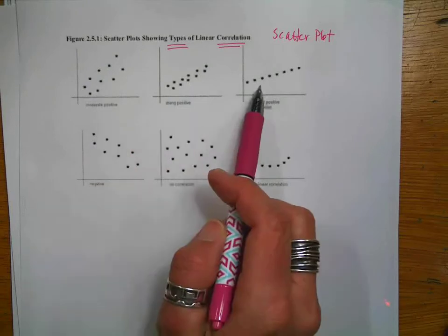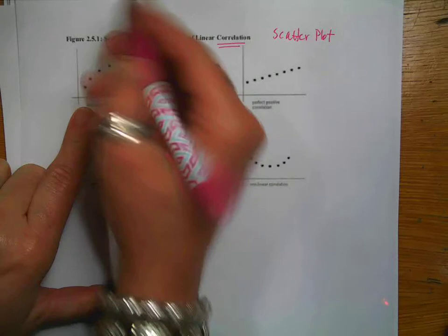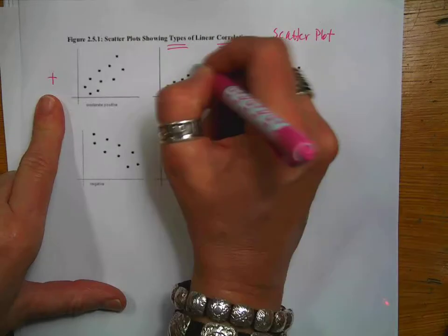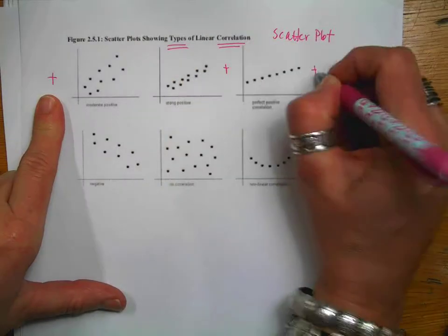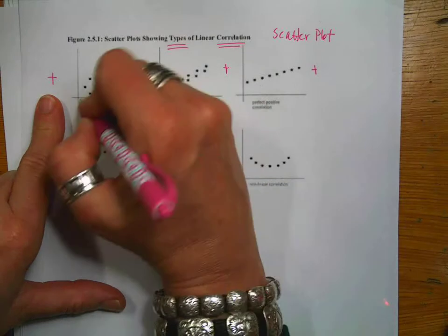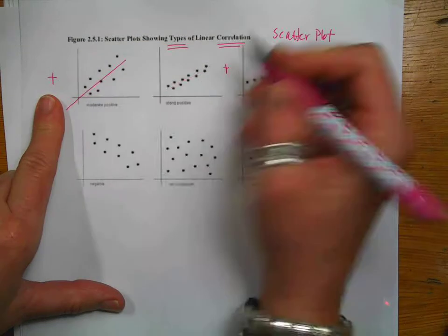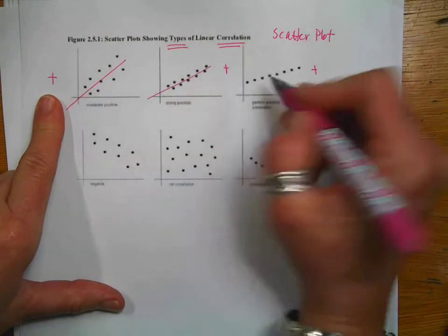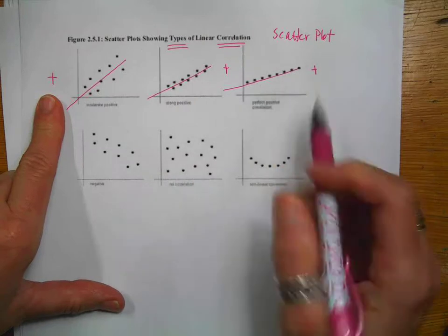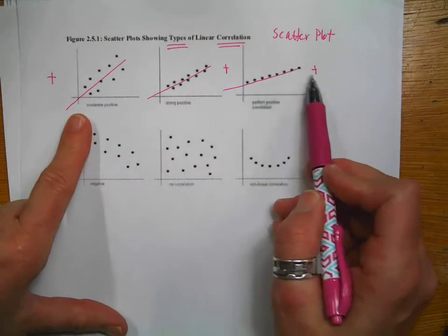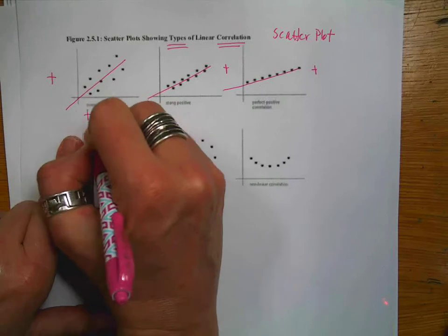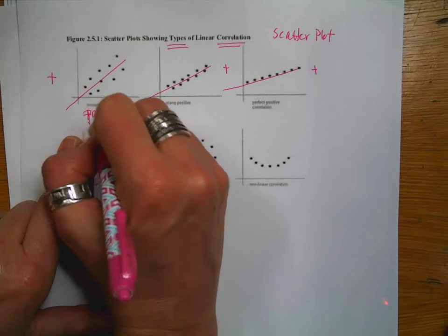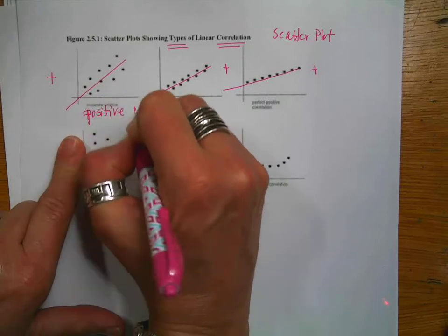A scatter plot shows a relationship and it shows a correlation. So if you look at the general slope, it would seem that this is a positive slope and a positive slope and a positive slope. Because if you imagine kind of drawing a line through the data, it would appear that it has a positive slope. So then we would say that it is a positive correlation.